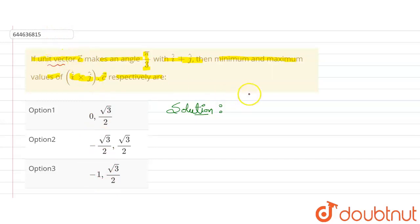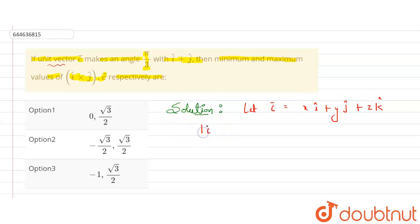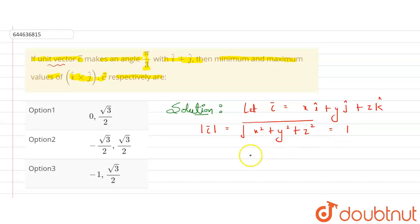It is given that c is a unit vector. Let's suppose c = xî + yĵ + zk̂. Since it is a unit vector, the magnitude of c equals 1, meaning √(x² + y² + z²) = 1. Squaring both sides gives x² + y² + z² = 1.